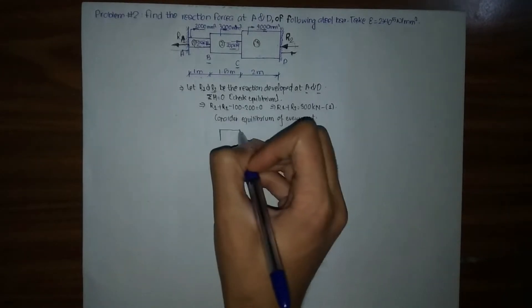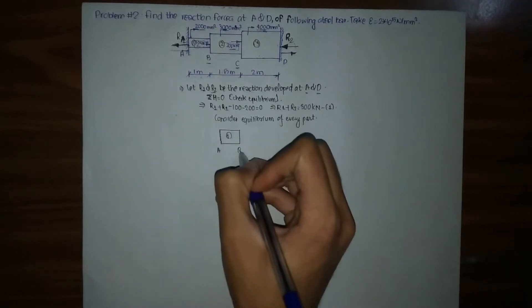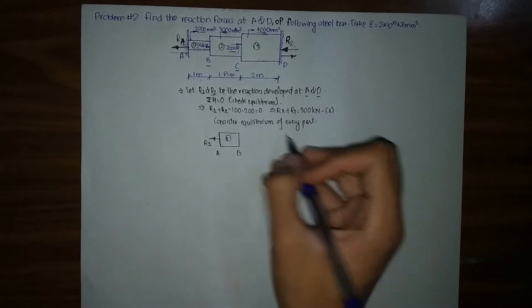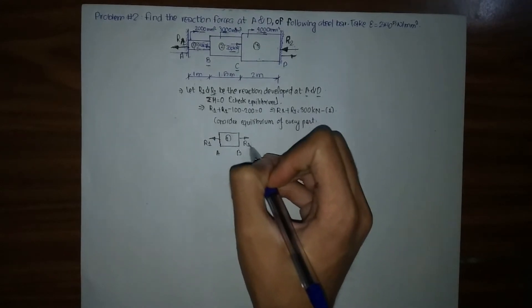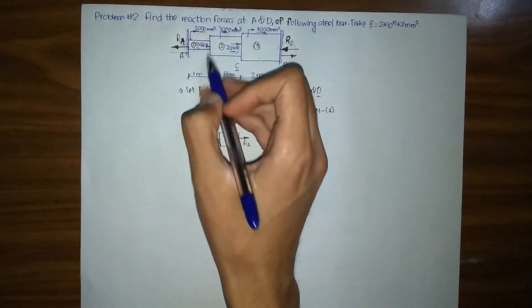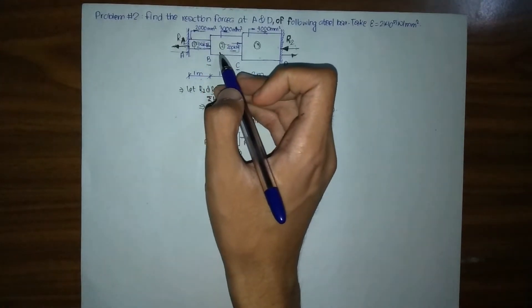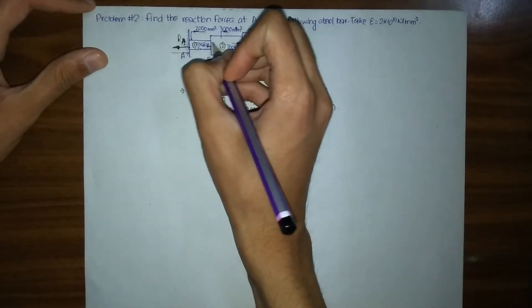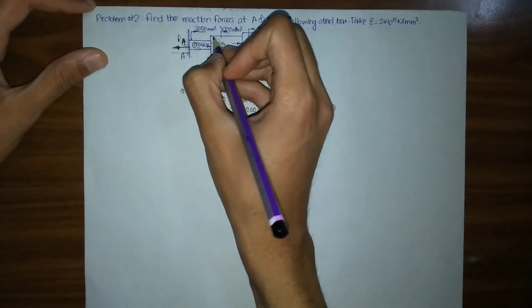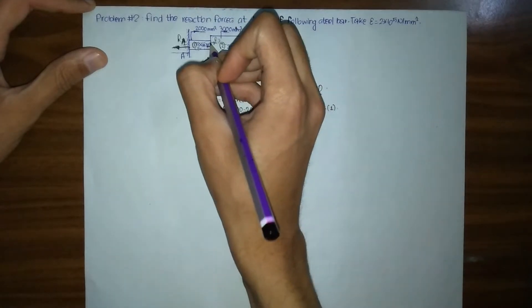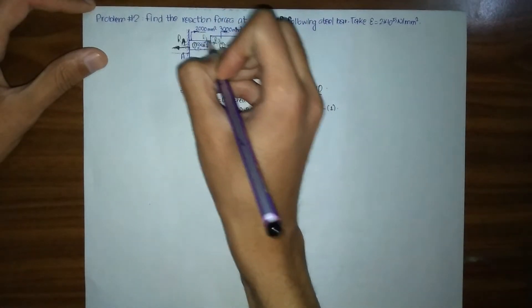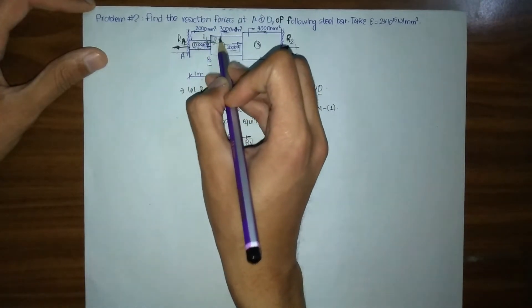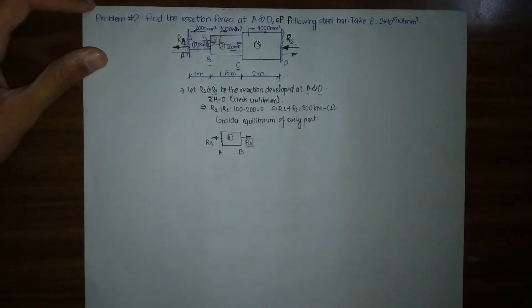For portion 1, between A and B, a force R1 acts to the left. To maintain equilibrium, a force R1 of tensile nature must act to the right at B. Since no such force exists in the figure, we assume equal and opposite forces of R1 acting at B — one to the left and one to the right — so they cancel out. The force acting to the right at B has been used for portion 1, making it tensile in nature.